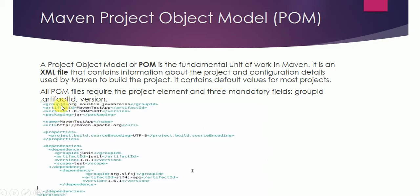In the POM file, you provide the groupId, artifactId, version name, and packaging format. If the packaging is set to 'jar', the build output will be a .jar file. If you want to deploy a web application, you set packaging to 'war' and the code will be built into a .war file for deployment. This is the overall structure of a pom.xml file.